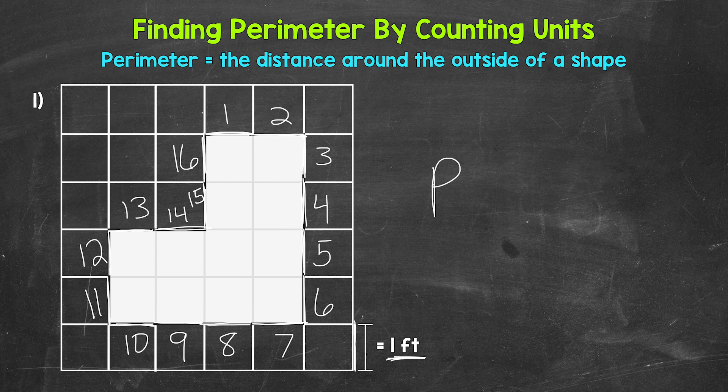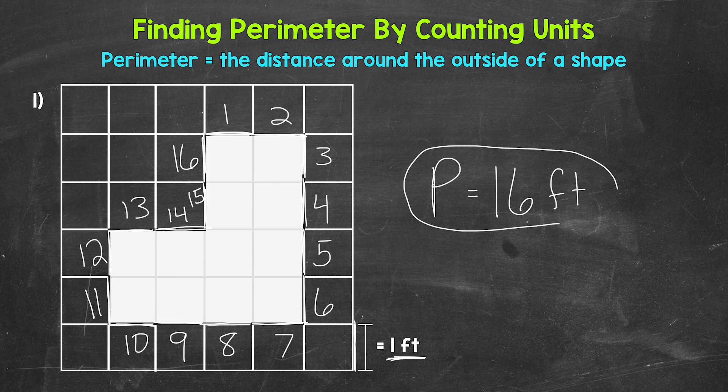Let's write this off to the side. And I'll use P for perimeter equals 16 feet. And we're done. So the perimeter for number one, 16 feet.